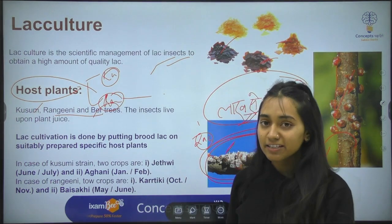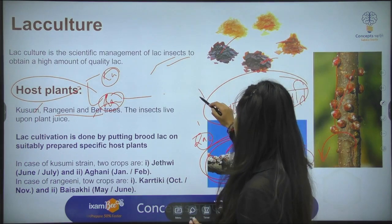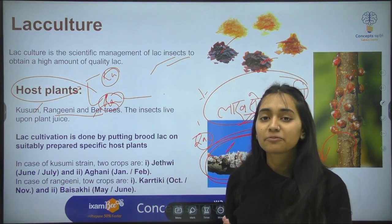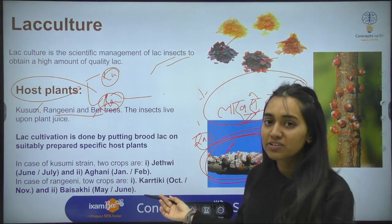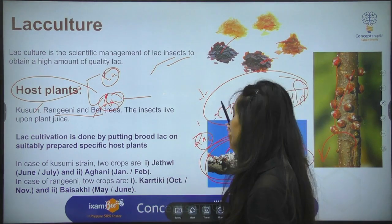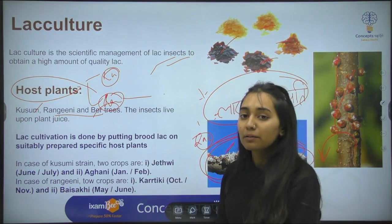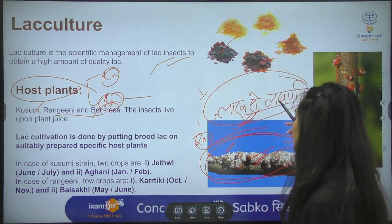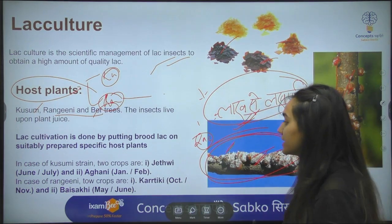Different products are derived from lac cultivation. You can cultivate lac on marginal land or wasteland, and you need particular tree species. This can be your main income or a subsidiary source of income, making lac cultivation beneficial for farmers.